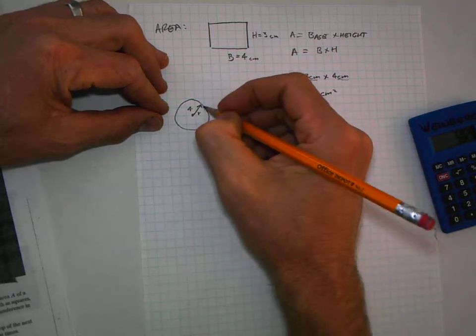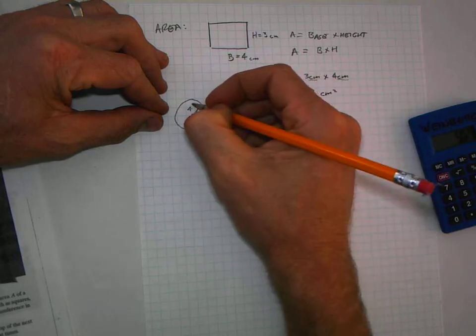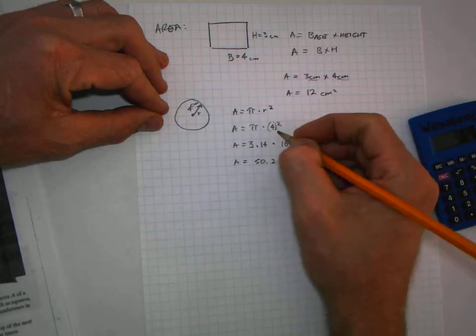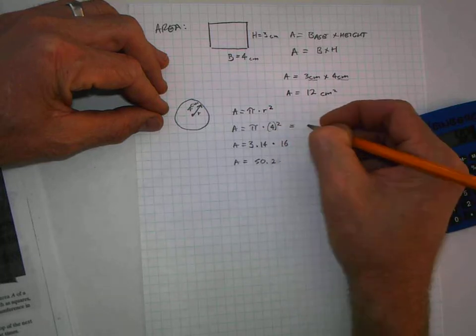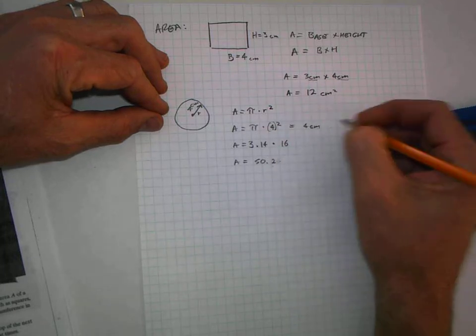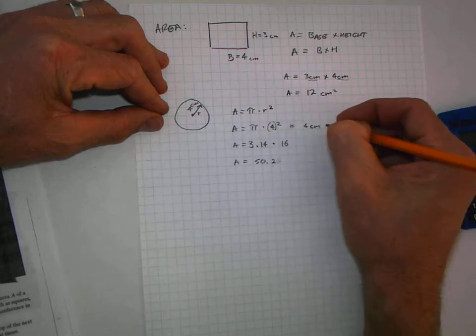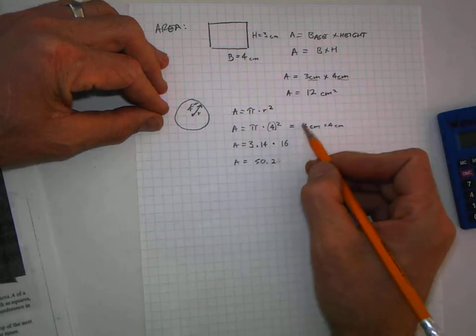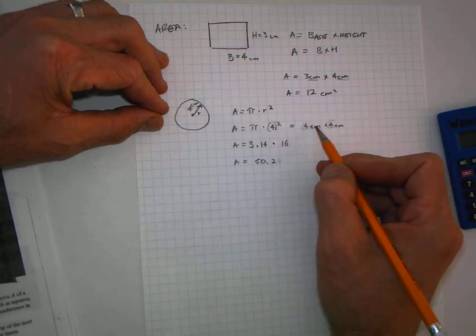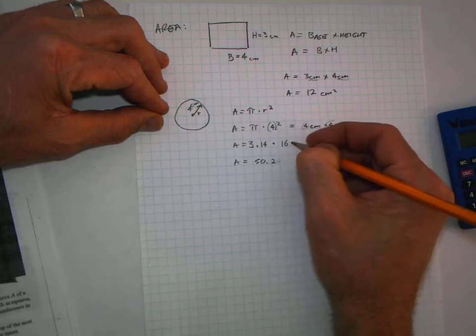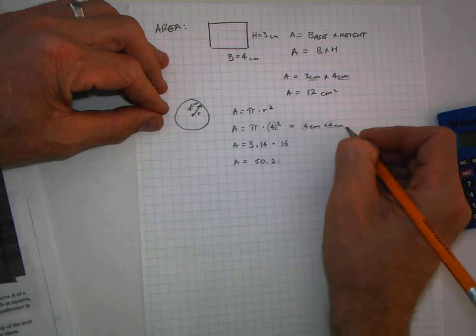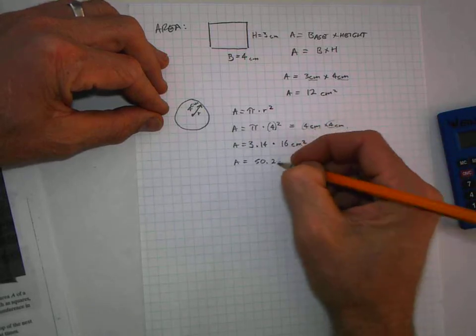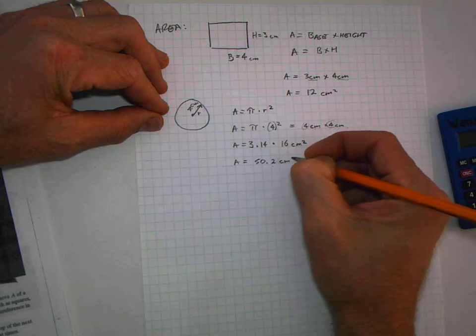If the radius is 4 centimeters, then we have 4 centimeters squared. Let me write this differently: 4 cm × 4 cm. So this 16 is not just the number 16—it's 4 times 4, and centimeters times centimeters, which is 16 cm². So the final answer is 50.2 cm².